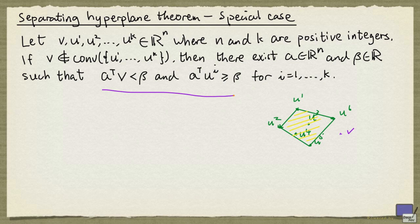If one looks at this, what this is saying is we can find an inequality a transpose x greater than or equal to beta, where ui satisfies the inequality, but not v.